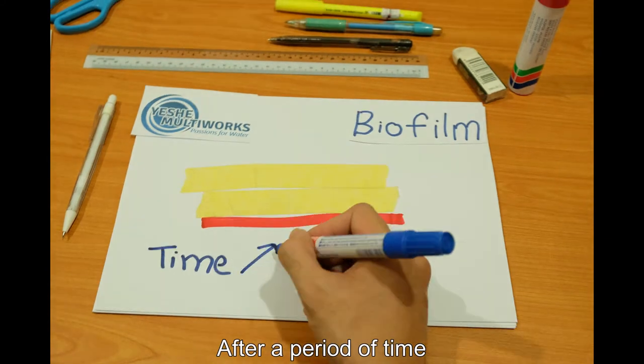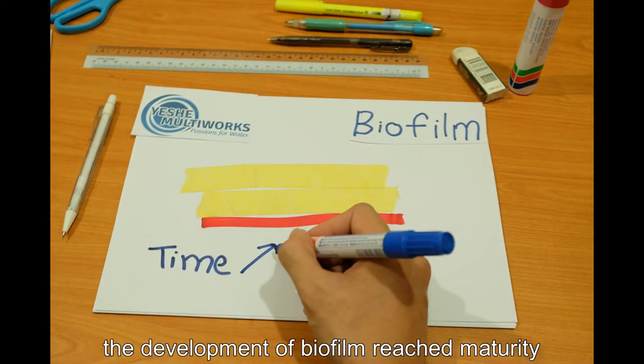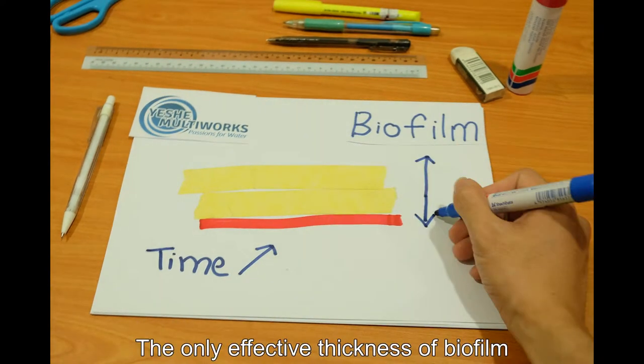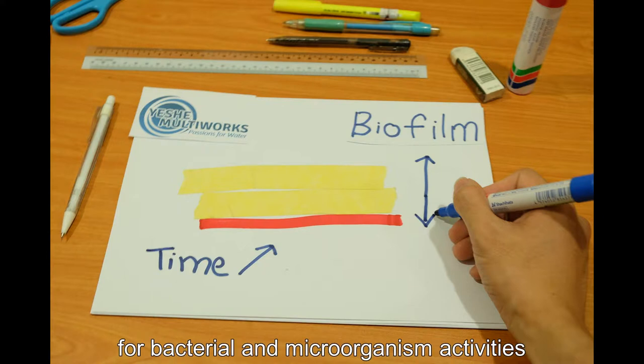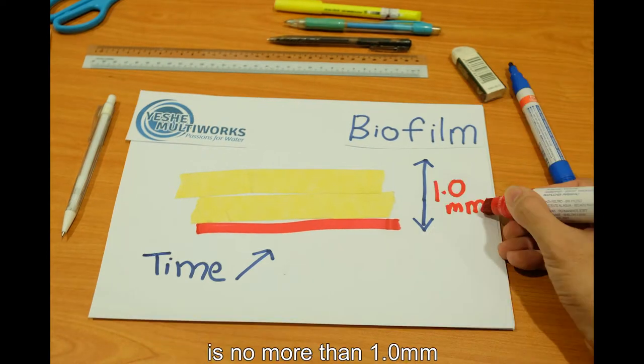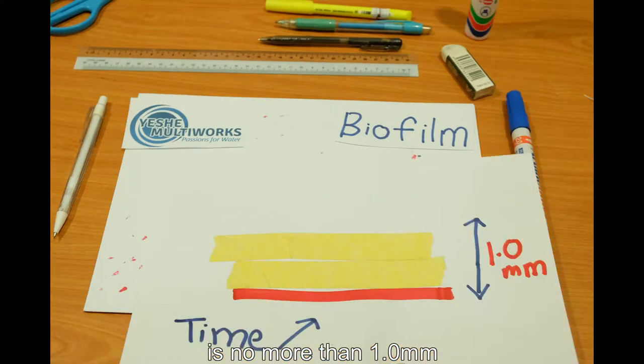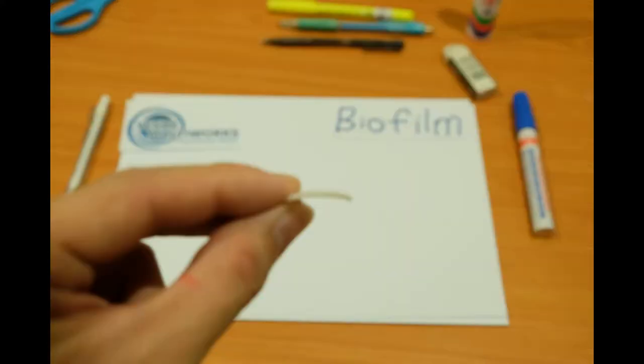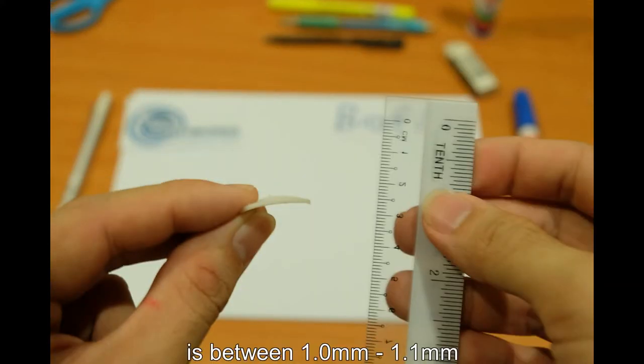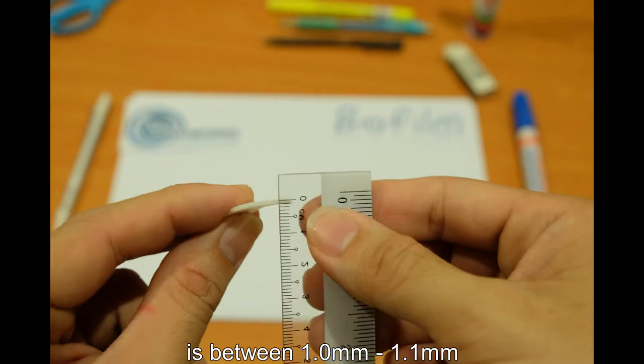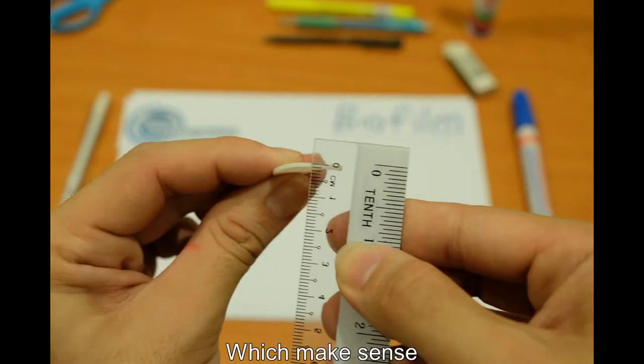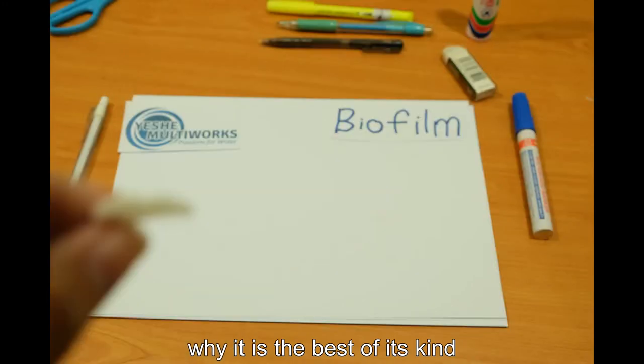After a period of time, the development of biofilm reaches maturity. The only effective thickness of biofilm for bacteria and microorganism activities is no more than one millimeter. In our case, the Mutag biochip thickness is between one millimeter to 1.1 millimeters, which makes sense why it is the best of its kind.